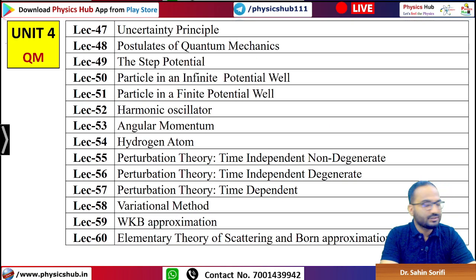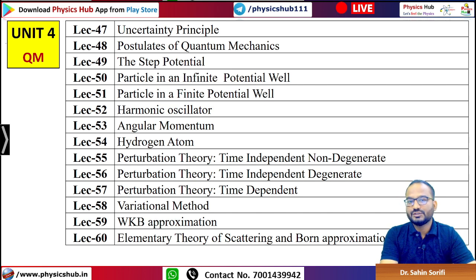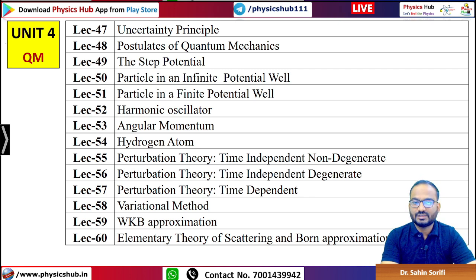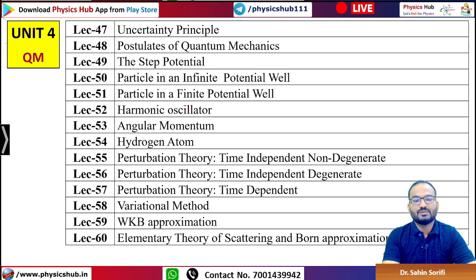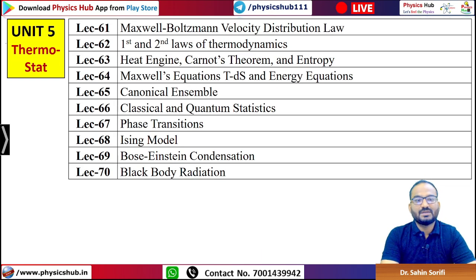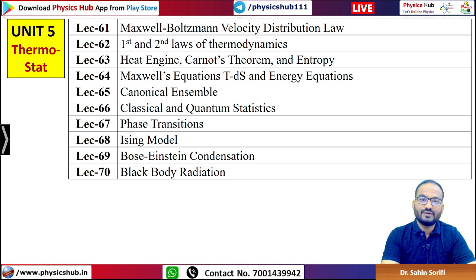Unit 4 is Quantum Mechanics. It starts with the uncertainty principle, postulates of quantum mechanics, state vectors, particle in finite and infinite potential wells, harmonic oscillator, angular momentum, hydrogen atom, perturbation theory — time-independent non-degenerate and degenerate cases — time-dependent perturbations, variational method, WKB approximation, and scattering and Born approximation.